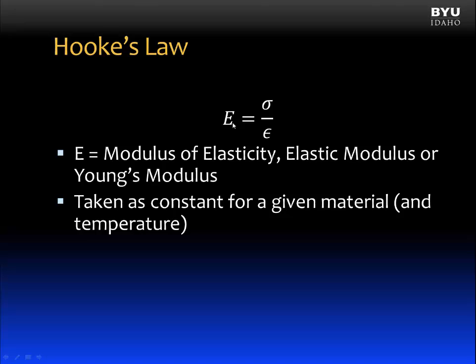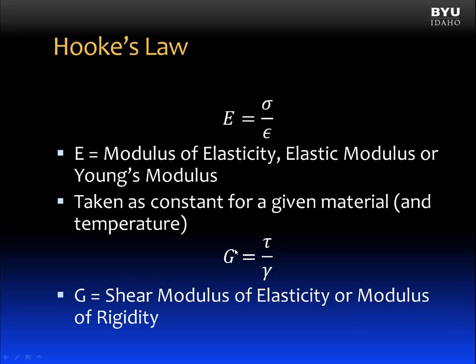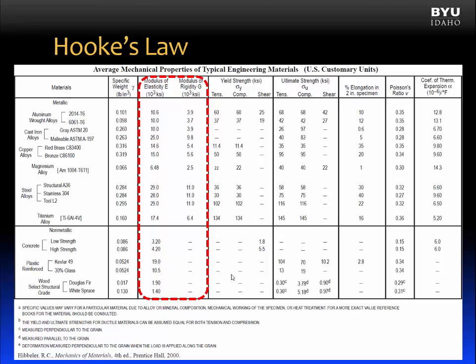Here is Hooke's Law — it can be written in various forms. E is the modulus of elasticity, also called the elastic modulus or Young's modulus. It's taken as a constant for a given material and also for a given temperature. We can also write Hooke's Law for the relationship between shear stress and shear strain. In this case, G is the shear modulus of elasticity, or modulus of rigidity. You can find values for E and G in most references containing the mechanical properties of materials.